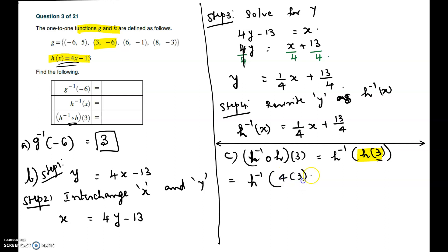So it is 4 times 3 minus 13. We are changing the input to 3. That will be h inverse of 12 - 13, which is h inverse of -1.